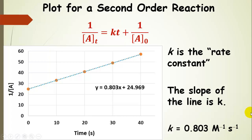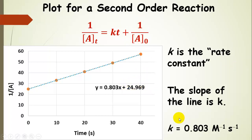We have plotted the reciprocals of the concentration at various times and fitted a line, and Excel produced this equation for us. According to this equation, the rate constant k, which is the slope of this line, is equal to 0.803. X is time and 1 over the initial concentration is 24.969 — obviously not quite a perfect fit, but that rounds to 25, so there is the reciprocal of the initial concentration. The units on the rate constant for a second order process are molar inverse seconds inverse.